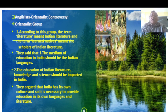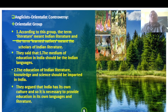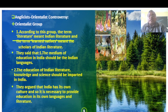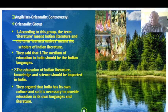The Orientalist group held that the term 'literature' meant Indian literature and 'learned natives' meant scholars of Indian literature. They said the medium of education in India should be Indian languages. Education of Indian literature, knowledge, and science should be given importance. They argued that India has its own culture and it is necessary to provide education in its own languages and literature.